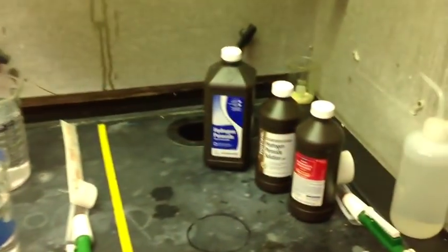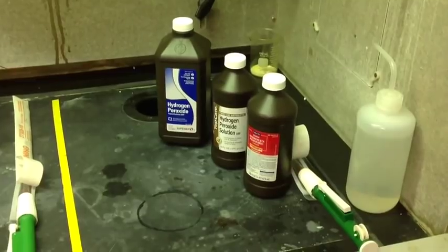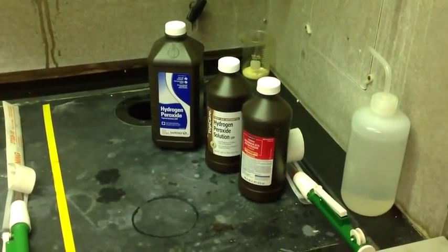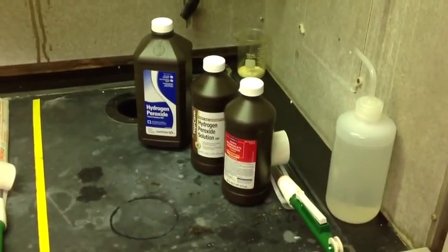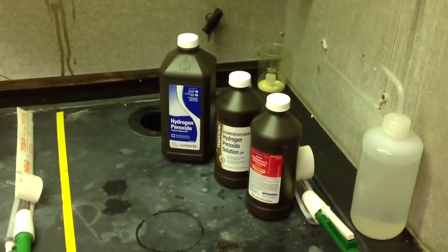In the first section on the right hand side is where you're going to start with your Erlenmeyer flask and you're going to get 5.00 milliliters of the hydrogen peroxide. It goes out to the hundredth place so it's pretty exact. Please get exactly that.